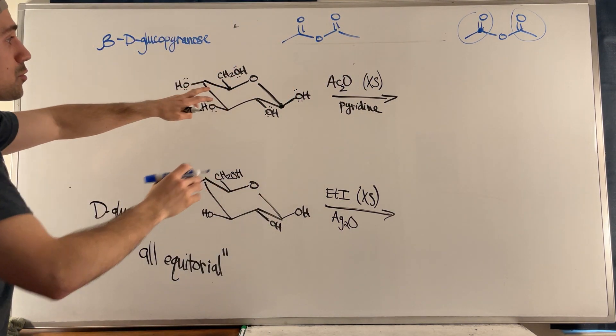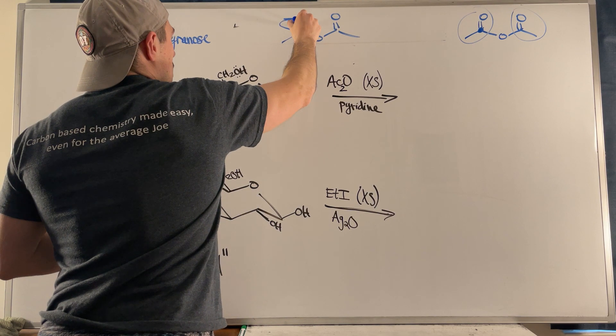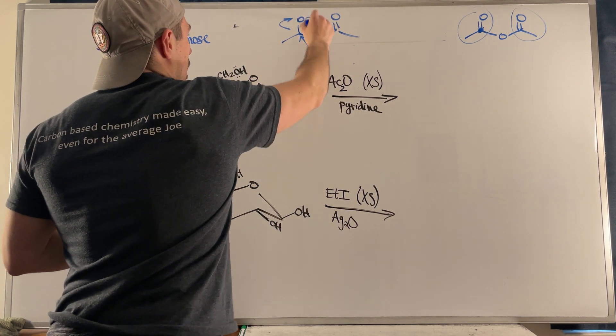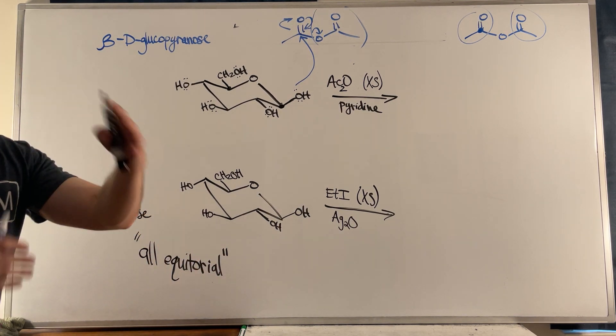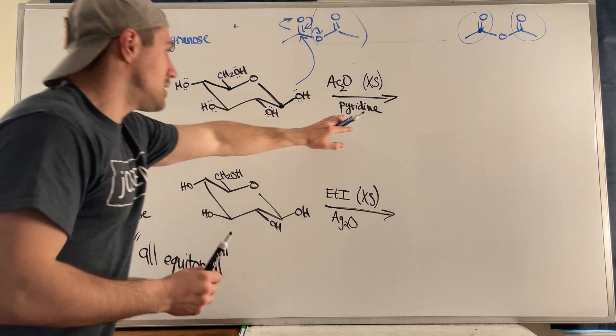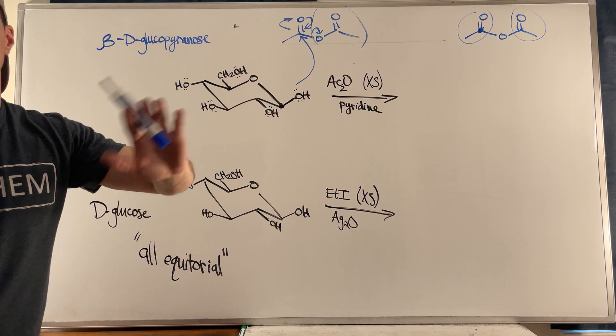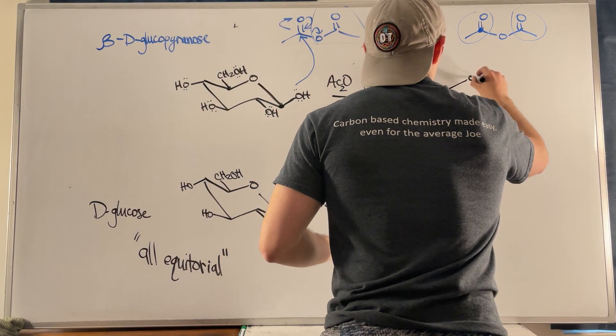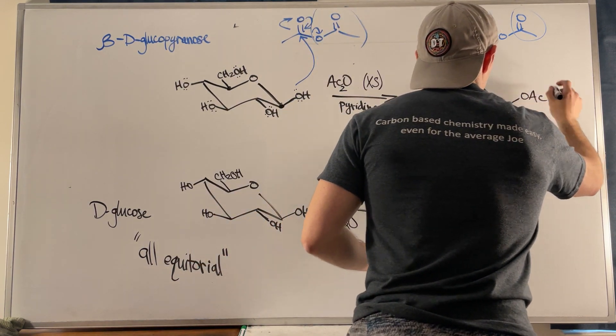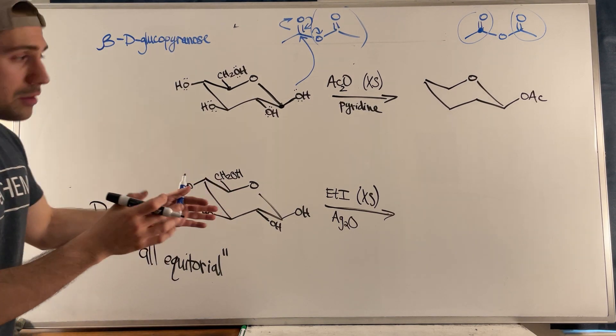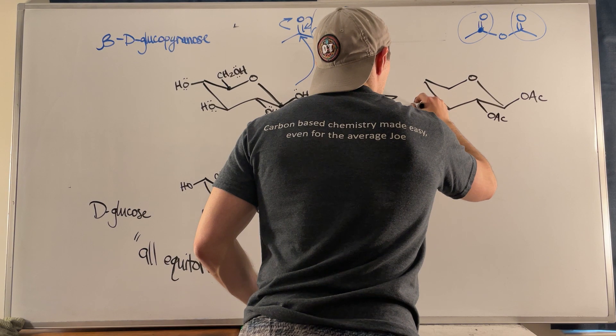Every one of these oxygens will do this except for the one embedded in the ring. We will attack the carbonyl carbon, electrons kick up, electrons kick down, we boot off this thing which is our good leaving group. It's just the addition elimination mechanism we learned when we did carbonyl acid derivatives. The pyridine here is to deprotonate this oxygen at the end - the pyridine is just for a little base cleanup. What you get at the end is you make esters at all your positions, so that means you will end up with an AC on all of your oxygens.